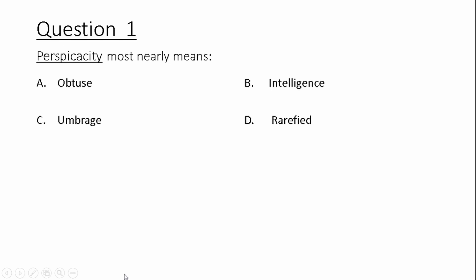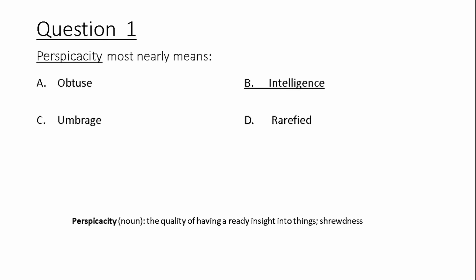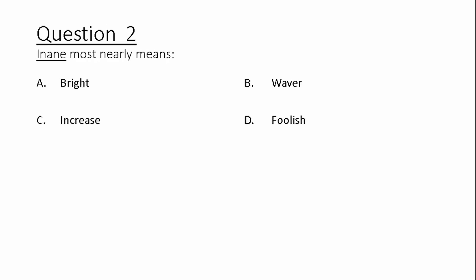Perspicacity most nearly means: A) obtuse, C) umbrage, B) intelligence, D) rarefied. Perspicacity: the quality of having a ready insight into things; shrewdness. Question 2.